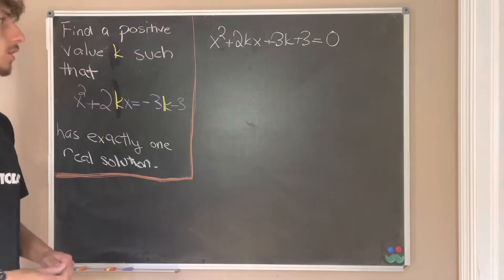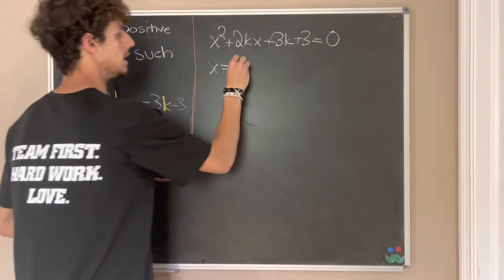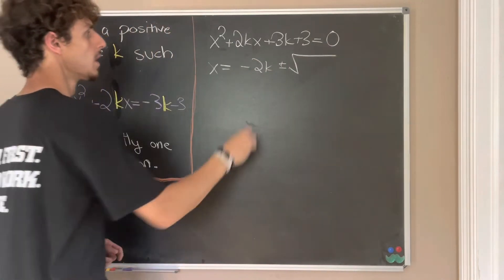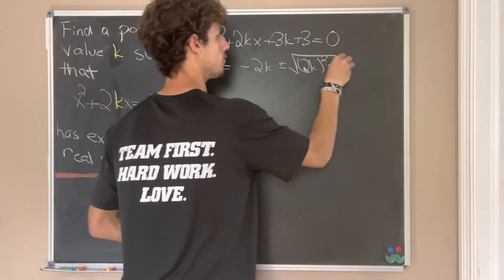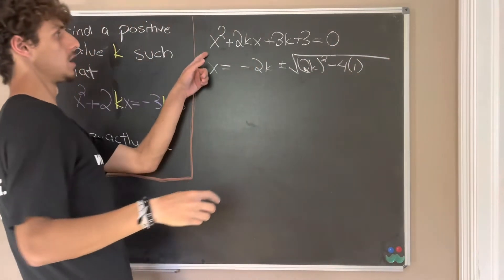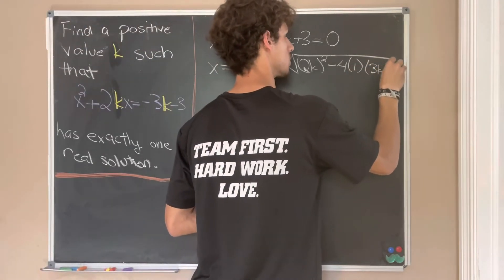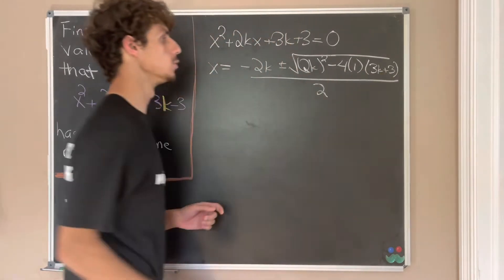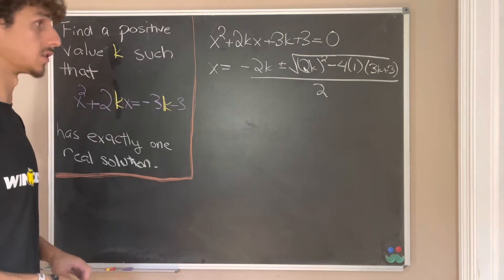But now we can apply the quadratic formula. So we'll have x is equal to negative 2k plus minus the square root of 2k all squared minus 4 times 1, that's the coefficient of our x squared term, times 3k plus 3. And that's all over 2 times 1, but we'll just leave that as 2, because 1 is our coefficient of the x squared term.